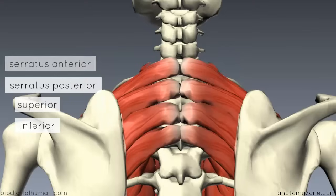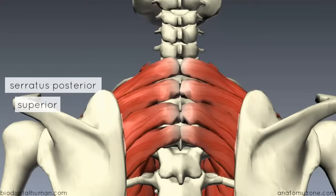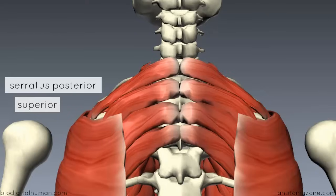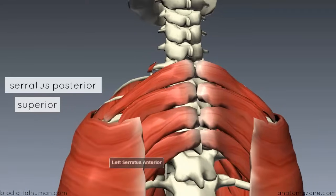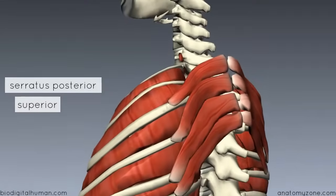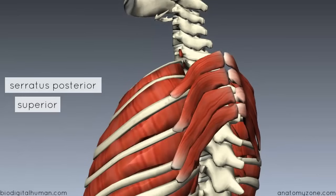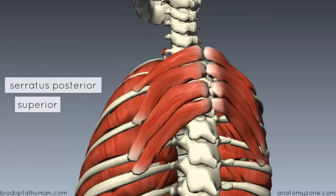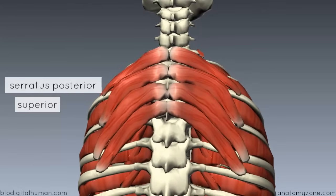We'll start with the superior muscle. The serratus posterior superior originates on the spinous processes of the vertebrae, from C7 to T3, and it inserts on the upper borders of the second to fifth ribs. If I just remove the scapula and temporarily remove the serratus anterior, you can see the insertion point on the ribs. This muscle is innervated by the corresponding intercostal nerves — the second to fifth intercostal nerves.